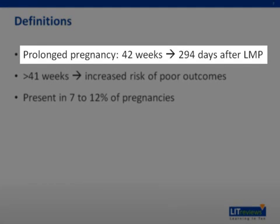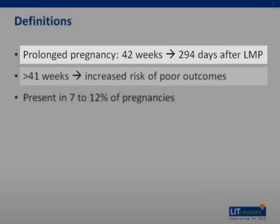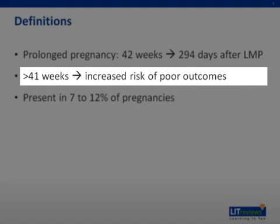Prolonged pregnancy is defined as a gestational age equal to or greater than 294 days, which is equivalent to 42 weeks, after the first day of the last menstrual period. Although there is no agreement on the correct term for this condition, ACOG states that we should use 'prolonged pregnancy' to describe a pregnancy that has lasted more than the upper limit of a normal term gestation. The 42-week mark is somewhat arbitrary, as it was established before the widespread use of antenatal testing. In fact, recent data shows a marked increase in perinatal morbidity and mortality after 41 weeks of gestation. Whether it's called post-dates, post-term, post-maturity, or prolonged pregnancy is not relevant for the USMLE.